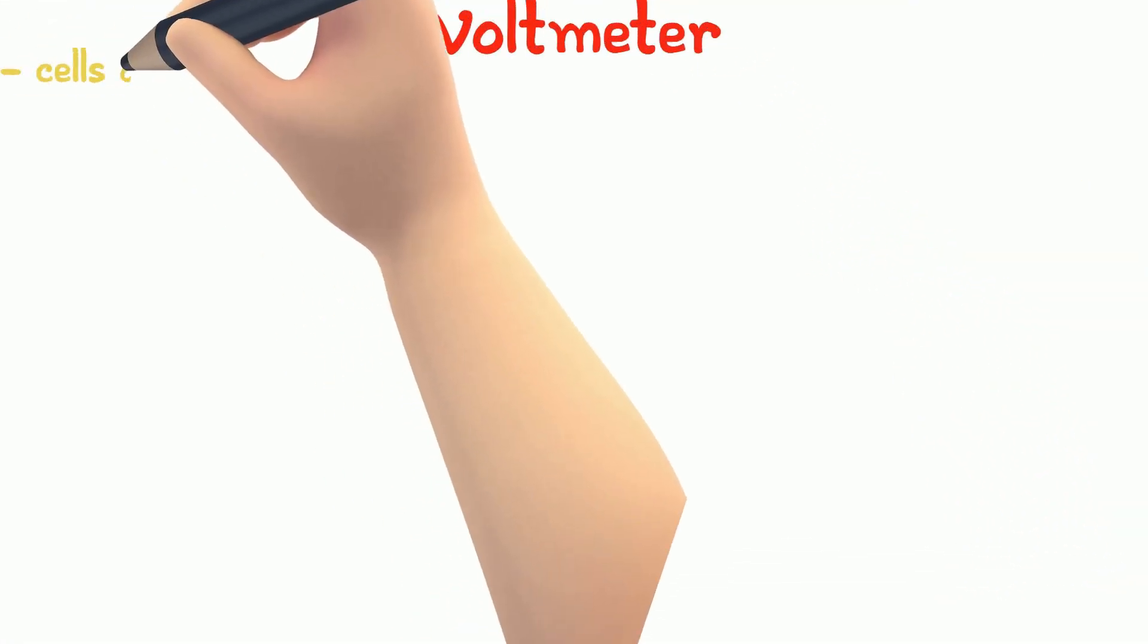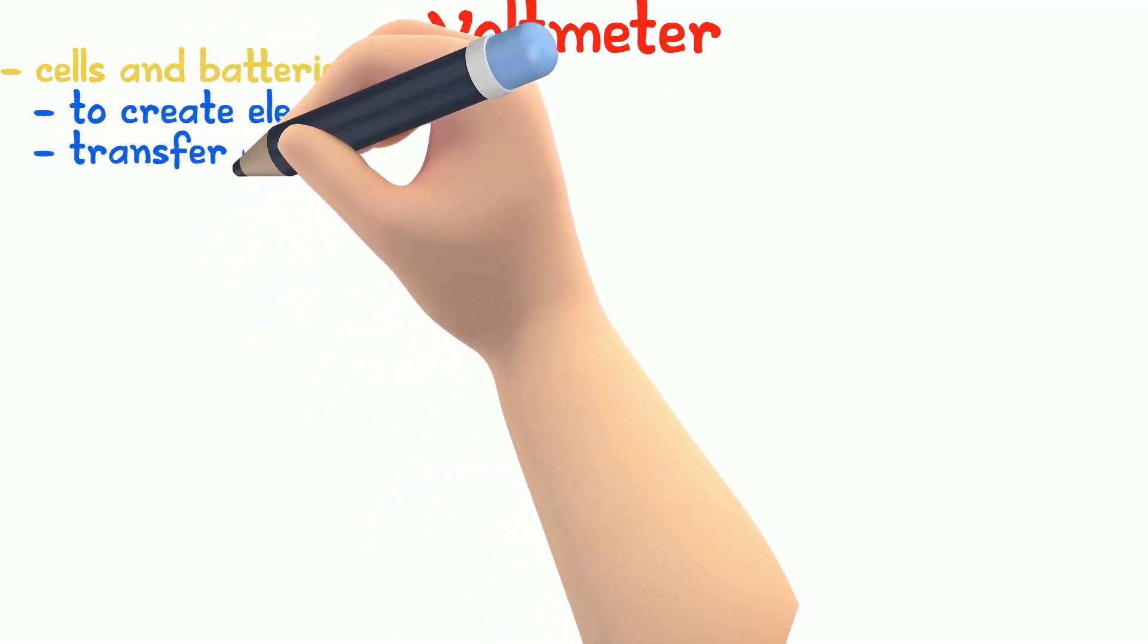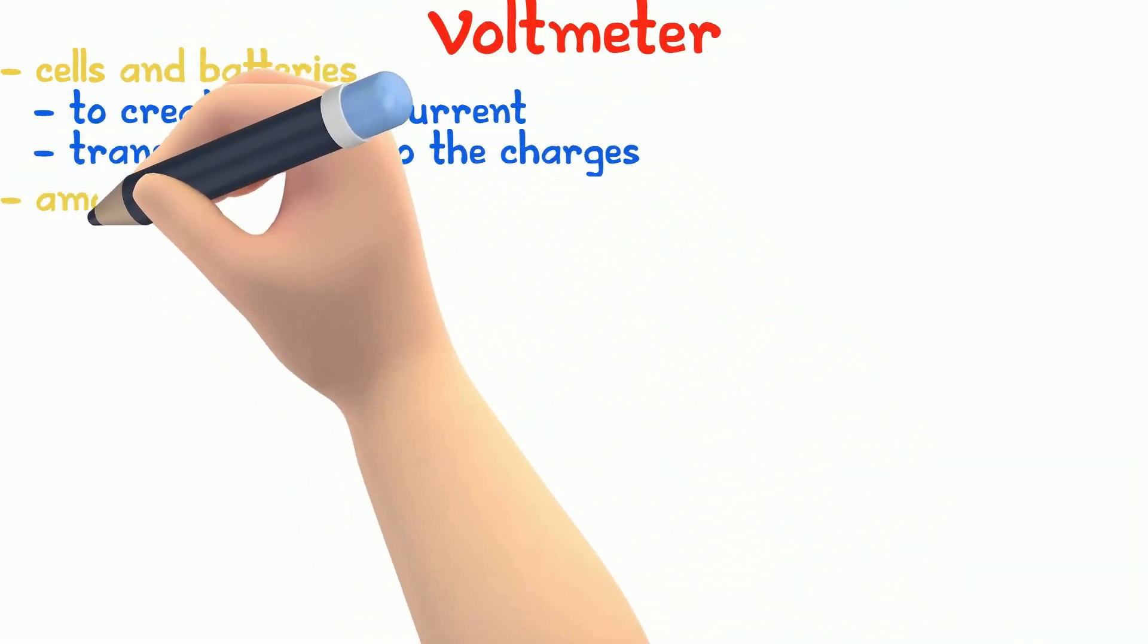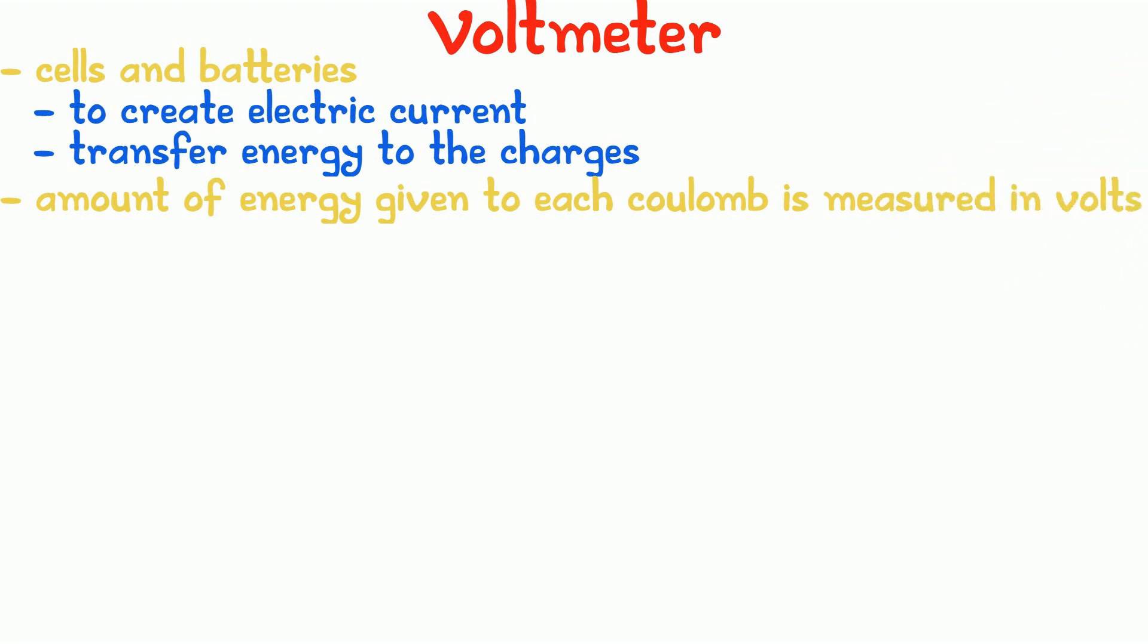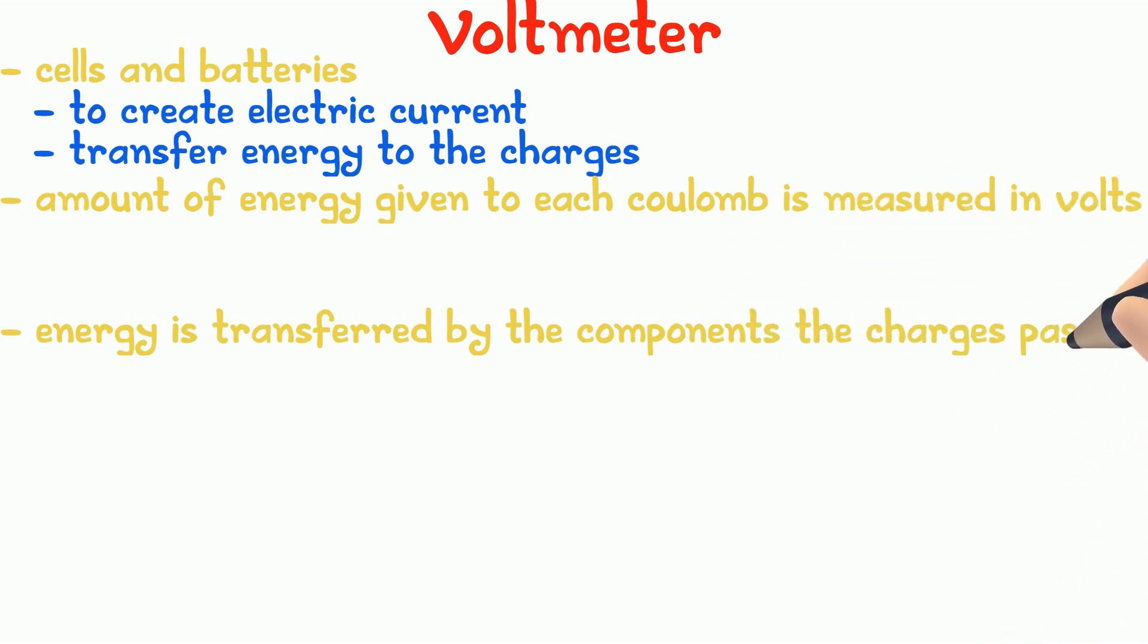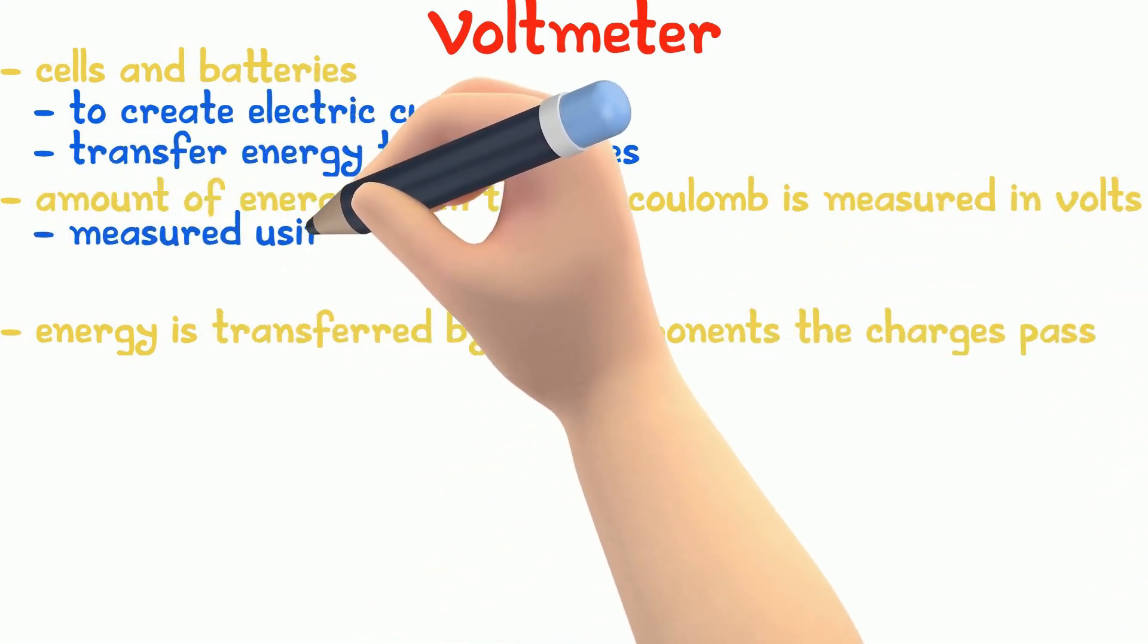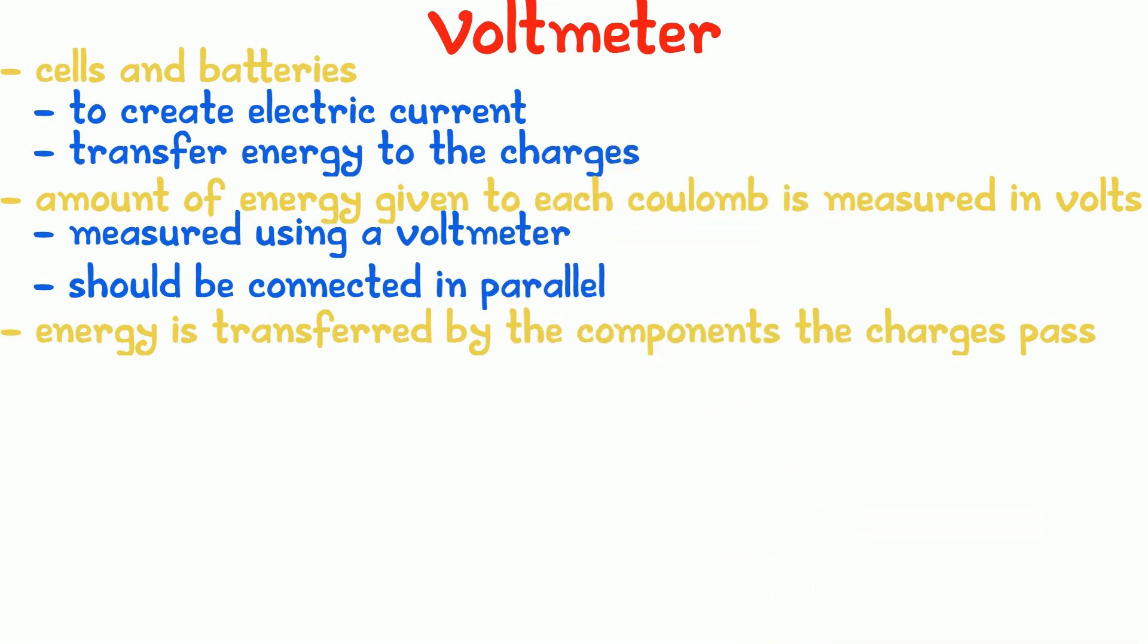As I mentioned before, cells and batteries are used to create electric current. They transfer energy to the charges. The amount of energy given to each coulomb is measured in volts. So as the charges flow, the energy is transferred by the components that they pass through. Voltage is measured using a voltmeter, which should be connected in parallel to the component that you are measuring the voltage of.